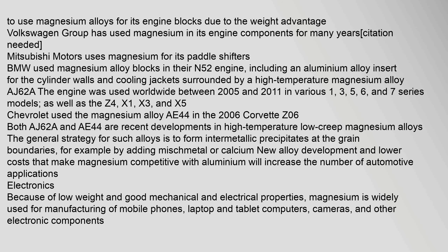Both AJ62A and AE44 are recent developments in high-temperature, low-creep magnesium alloys. The general strategy for such alloys is to form intermetallic precipitates at the grain boundaries, for example by adding mishmetal or calcium. New alloy development and lower costs that make magnesium competitive with aluminium will increase the number of automotive applications. Because of low weight and good mechanical and electrical properties, magnesium is widely used for manufacturing of mobile phones, laptop and tablet computers, cameras, and other electronic components.